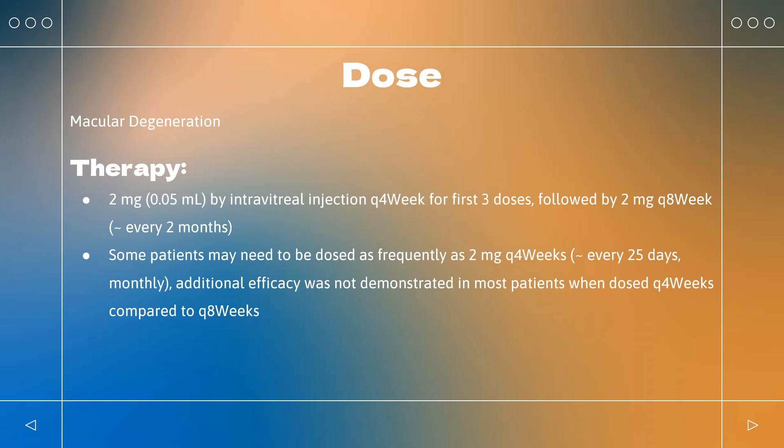Diabetic retinopathy. Eylea: 2 mg (0.05 ml) administered by intravitreal injection every 4 weeks for the first 5 doses, followed by 2 mg every 8 weeks. May be dosed as frequently as every 4 weeks; however, additional efficacy was not demonstrated when dosed every 4 weeks compared to every 8 weeks. Some patients may need every 4-week (monthly) dosing after the first 20 weeks (5 months). Eylea HD: 8 mg (0.07 ml of 114.3 mg/ml) by intravitreal injection every 4 weeks (Q28 days ± 7 days) for the first 3 doses, followed by 8 mg every 8–16 weeks (± 1 week).